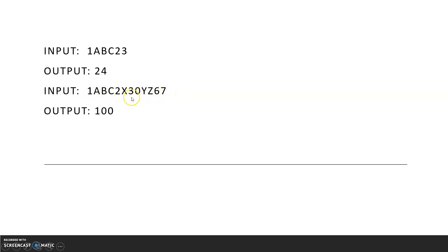Another example: if the input string is '1abc2x30yz67', then 1 is one integer, 2 is a separate integer, and 30 is formed by consecutive digits 3 and 0. So 67 plus 30 plus 1 equals 100. But if you consider this as a single input string, there is nothing called 67 — it is basically 6 and 7, because that's how strings work.